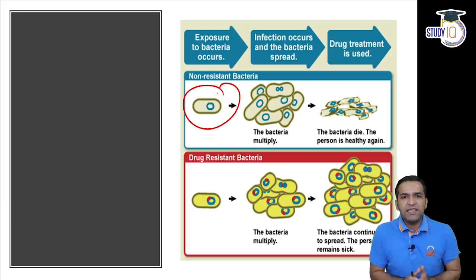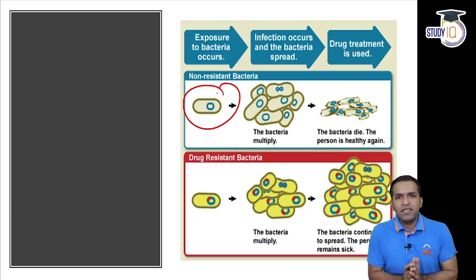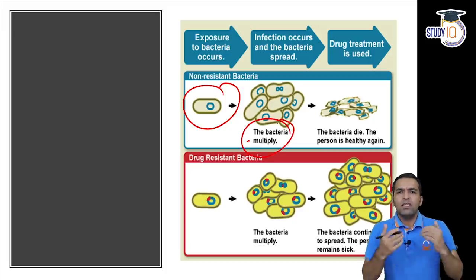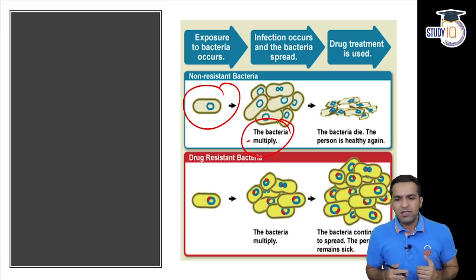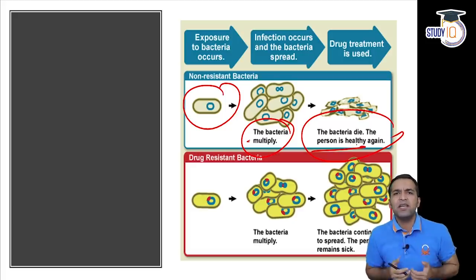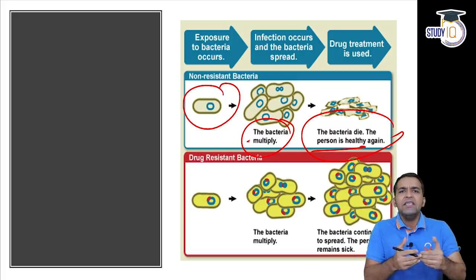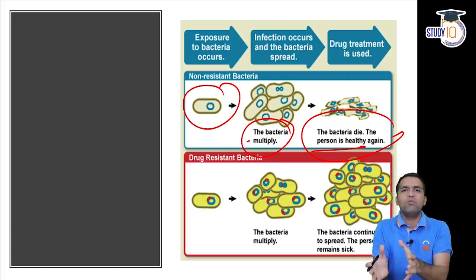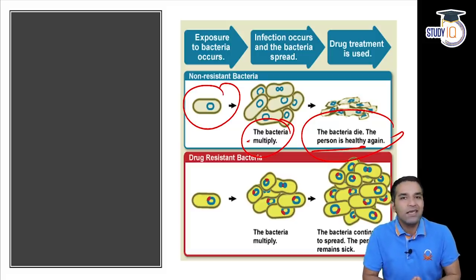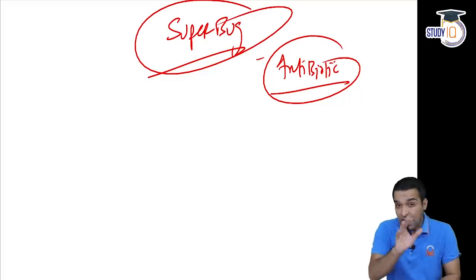Ab is game ko samajhte hain ki hota kya hai. Non-resistant bacteria hai - body ke andar bacteria aana, bacteria body mein multiply hona, toh insaan bimaar hona start ho gaya. And the bacteria die jaise hi hum antibiotic le lete hain - antibiotic yaani bacteria ka jo anti hota hai - jaise hi hum woh le lete hain, toh bacteria maar jaata hai, and we get healthy again.